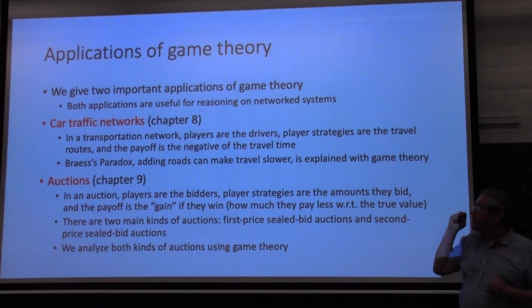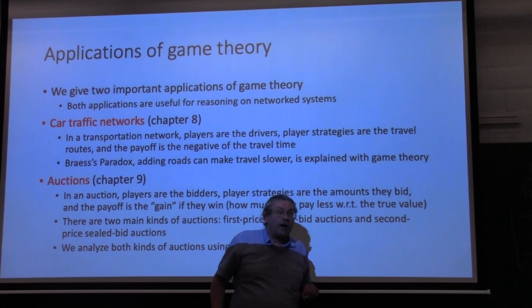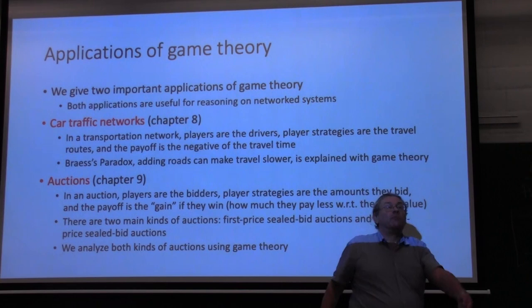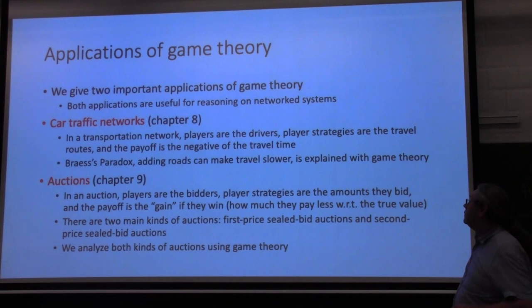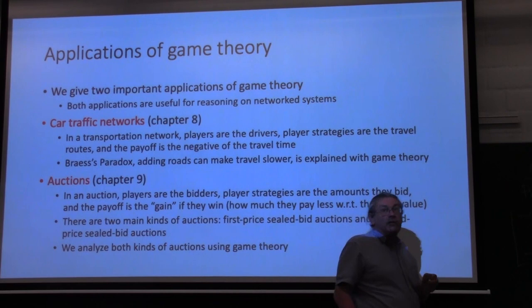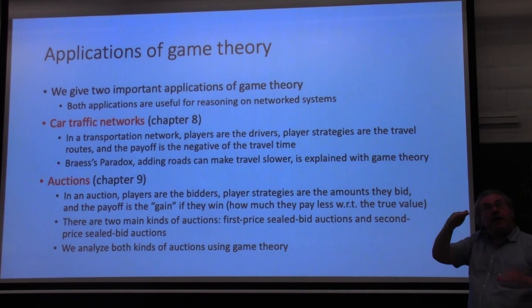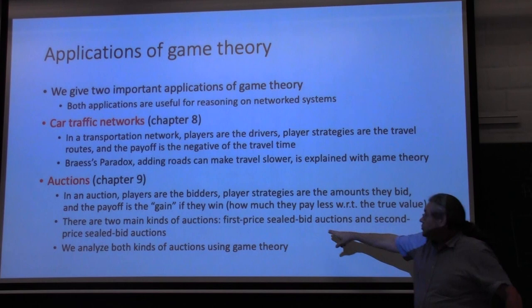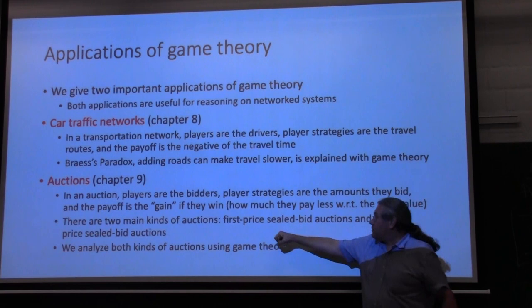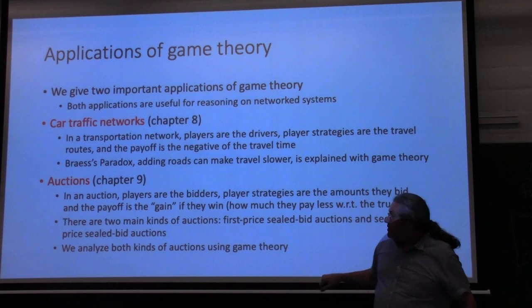Then we talk about auctions — vente aux enchères. Players are the bidders. You bid for items. The strategies are how much you bid. And the payoff is what you gain when you win — basically how much less you pay compared to the value of what you get. There are two kinds of auctions: first price sealed bid and second price sealed bid. Google makes all their money on this.